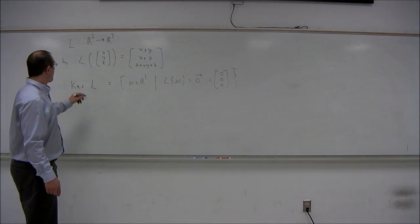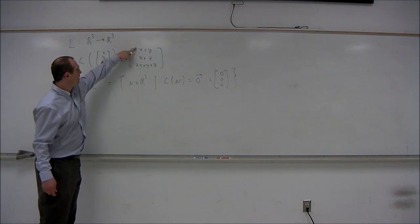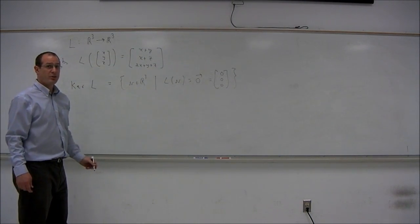In this example, if a vector (x,y,z) were in the kernel, then the output vector would be (0,0,0).